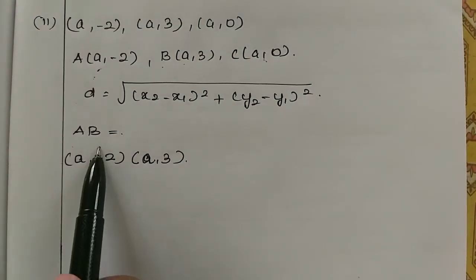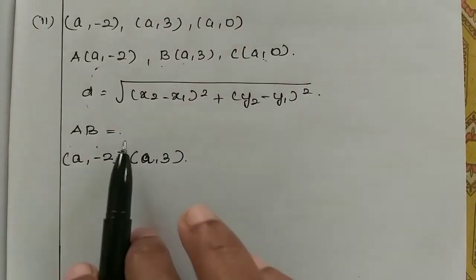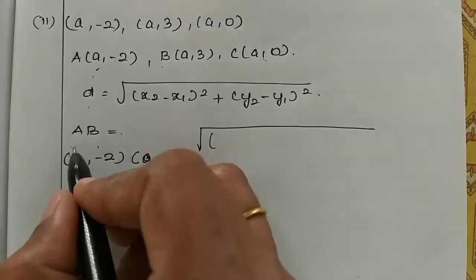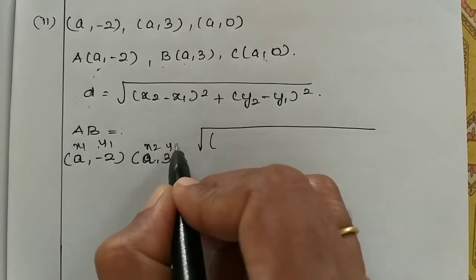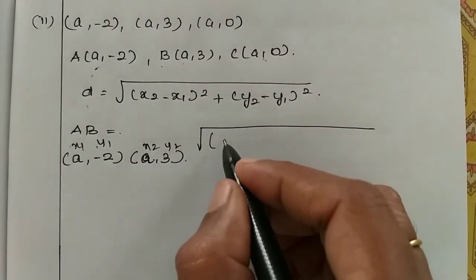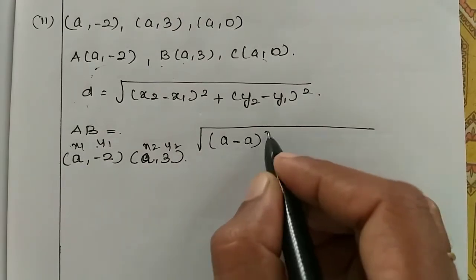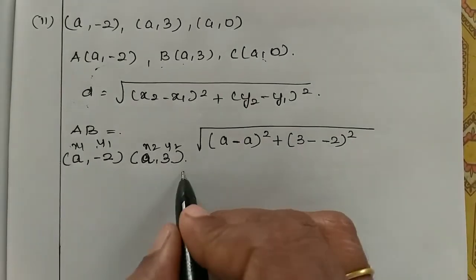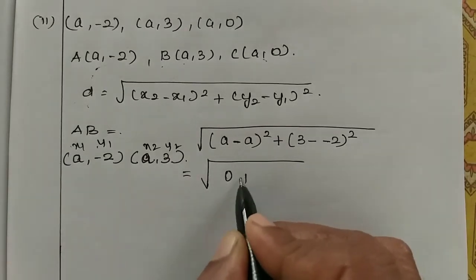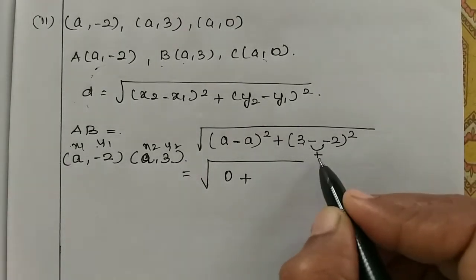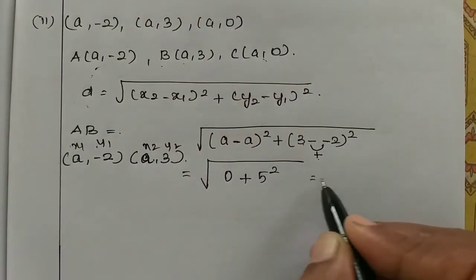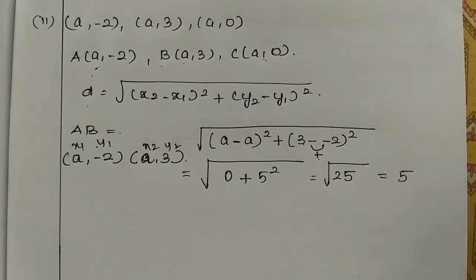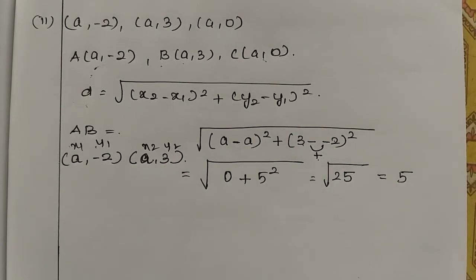So first, AB distance using the distance formula: root of (x2 minus x1) whole square plus (y2 minus y1) whole square. Here x1, y1 is point A and x2, y2 is point B. So x2 is a minus x1 is a, whole square, plus y2 is 3 minus y1 is minus 2, the whole square. So a minus a is 0, plus minus into minus plus, 3 plus 2 is 5, which equals root of 25, so root 25 equals 5. AB distance is 5.